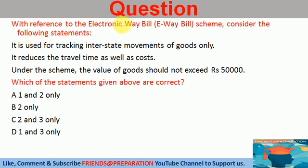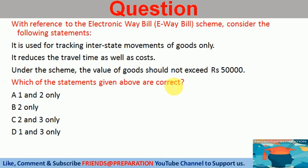With reference to the electronic e-way bill, consider the following statements. Statement 1: It is used for tracing interstate movement of goods only. Statement 2: It reduces the travel time as well as cost. Statement 3: Under the scheme, the value of goods should not exceed Rs. 50,000. Which of the statements given above are correct?